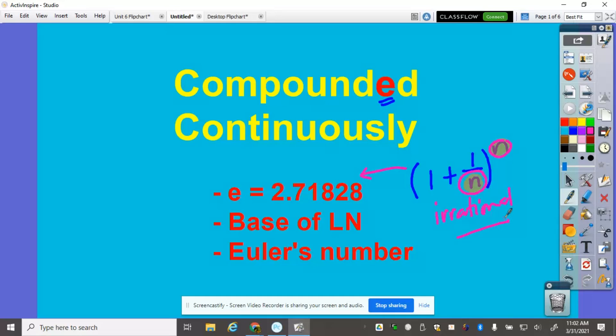Also E is the base that we use for LN. LN is a natural logarithm, natural log. It is mainly YCP because it's a Euler's number. They call it Euler's or Euler's number.